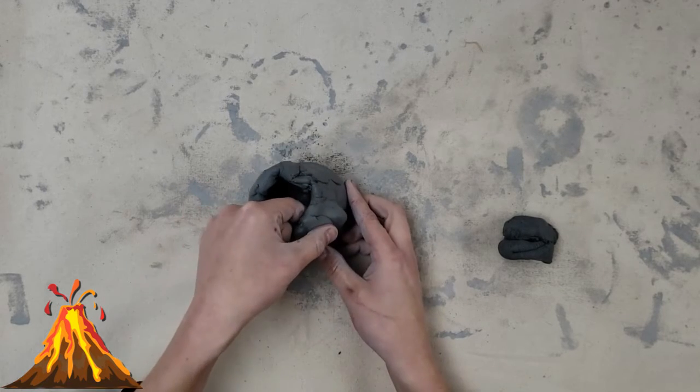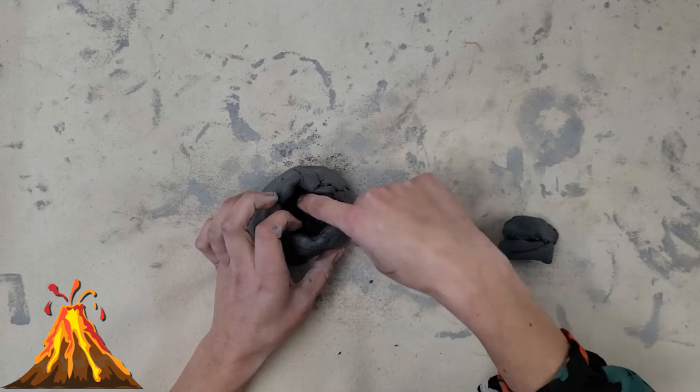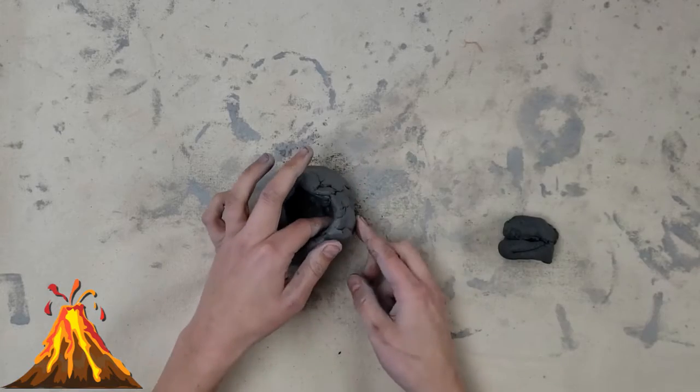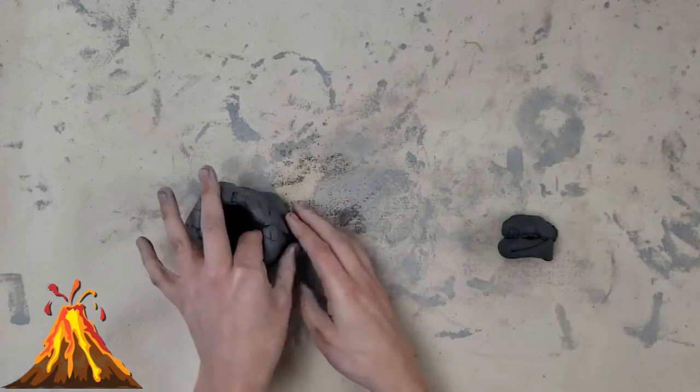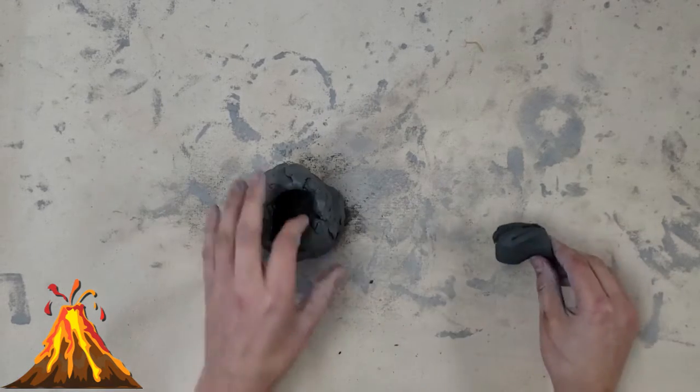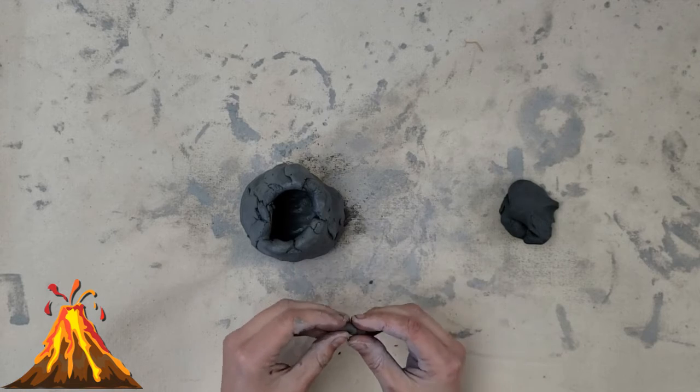Okay, now we don't want our clay any more thicker than our pinky really, so kind of press it down. Our whole mountain should not be thicker than that. And here you can see it's really starting to look like lava. I'm going to make more lava come down here and this is actually my crack, my seam is. We can use that like a crack of the mountain.